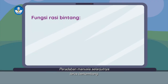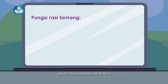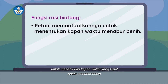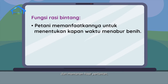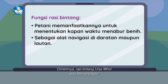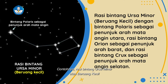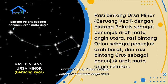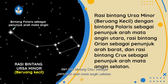Peradaban manusia selanjutnya terus berkembang. Sebelum peta, kompas, dan kalender ditemukan, petani memanfaatkan Rasi Bintang untuk menentukan kapan waktu yang tepat untuk menabur benih dan memanen hasil pertanian, serta menggunakan Rasi Bintang sebagai alat navigasi di daratan maupun di lautan. Contohnya Rasi Bintang Ursa Minor atau Beruang Kecil dengan Bintang Polaris sebagai penunjuk arah mata angin utara, Rasi Bintang Orion sebagai penunjuk arah barat, dan Rasi Bintang Kraks sebagai penunjuk arah selatan.